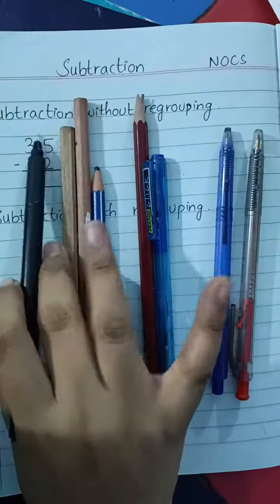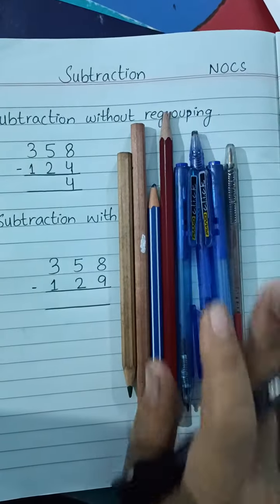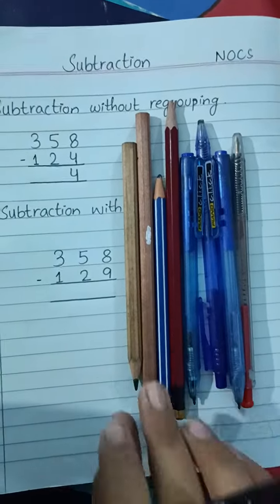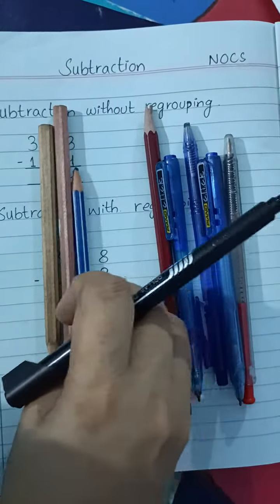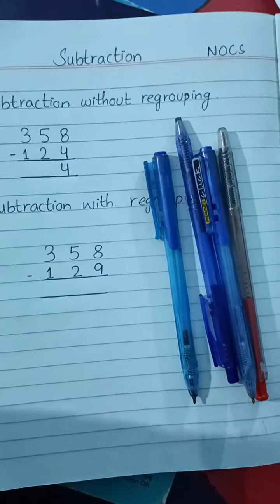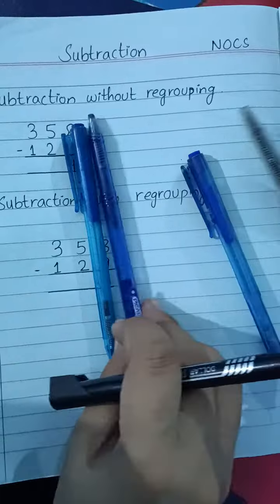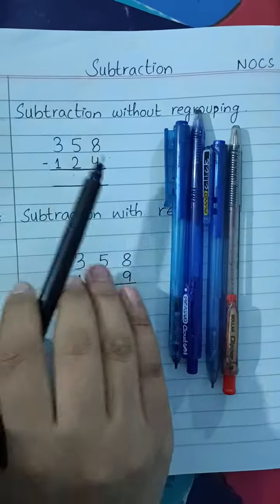Now you have to subtract 4 from 8, so you have to take out 4 pens or pencils from this. I have taken 1, 2, 3, 4. Now the remaining numbers are 1, 2, 3, 4 as you can see.